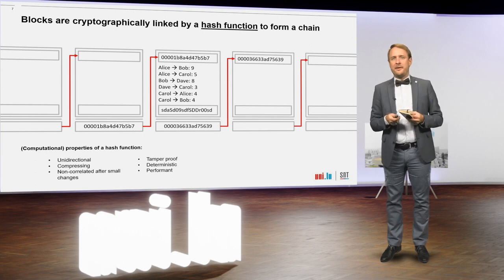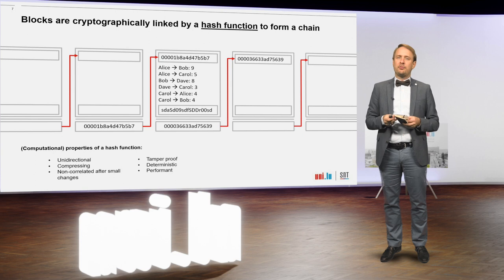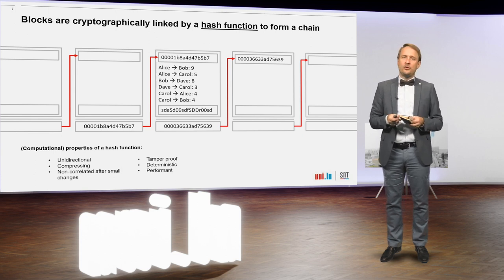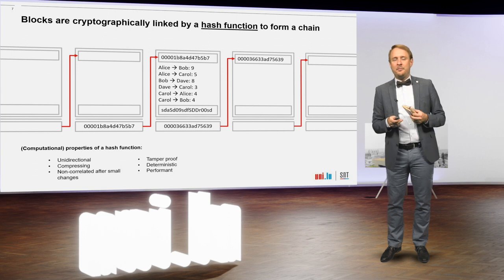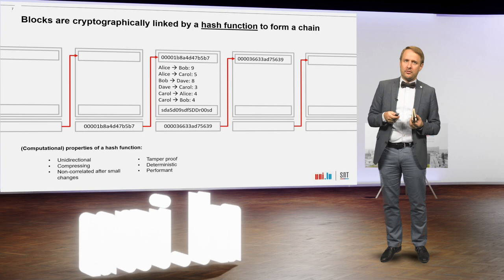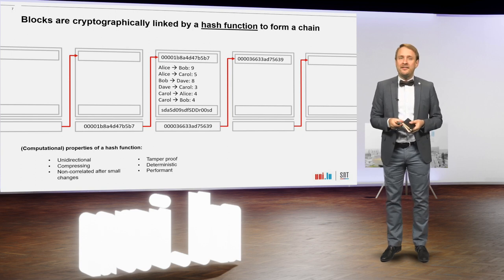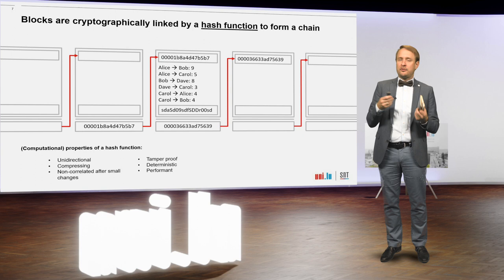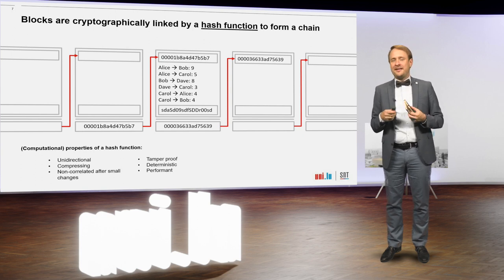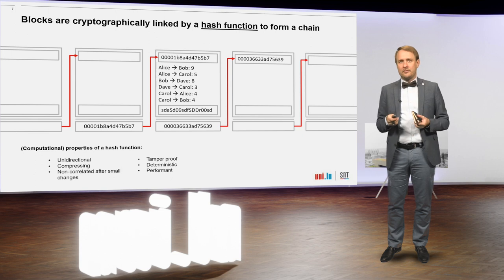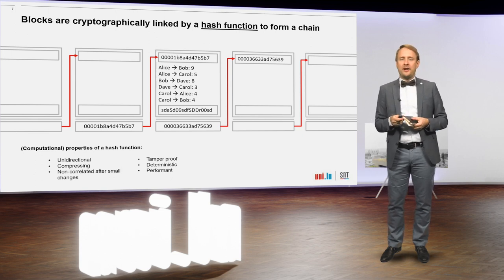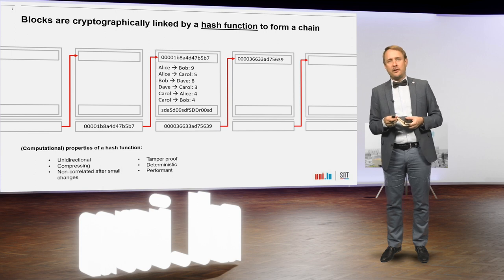The binding of the book, the chaining of the blocks, is based on a mathematical function called a hash function. A hash function has a few special properties: it is unidirectional, meaning you cannot calculate the function's input from its output. It is also compressing — you can feed data of arbitrary size, but you will always get a hash value of the same fixed size as output. With the help of a hash function, we can now connect our blocks — the pages of our book.